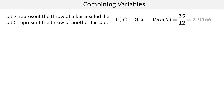Similarly, we should be able to find the variance of X using Year 12 techniques. We square each of the X values, multiply by the associated probability to give us E(X²), then subtract the expectation of X squared — subtracting 3.5 squared — to get the variance.